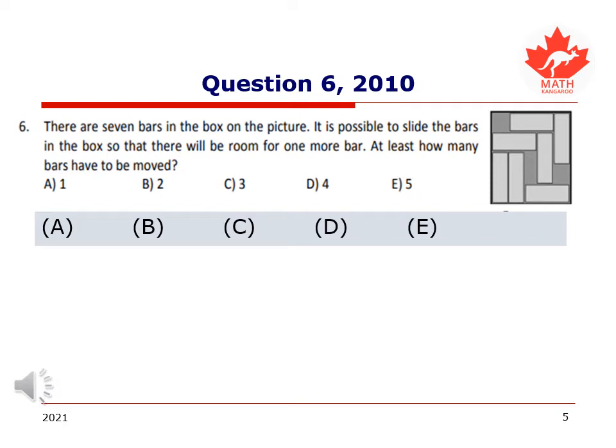Moving on to the 2010 assessment, we look at question six. There are seven bars in the box on the picture. It is possible to slide the bars in the box so that there will be room for one more bar. At least how many bars have to be moved? The box that we're looking at is pictured on the right here.